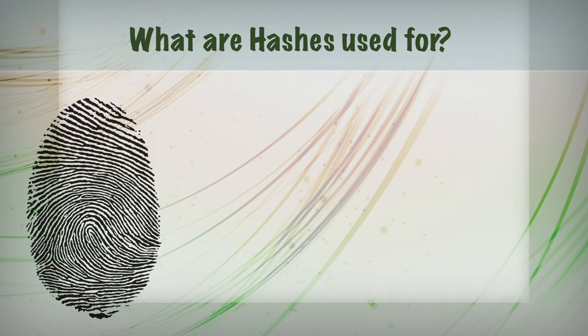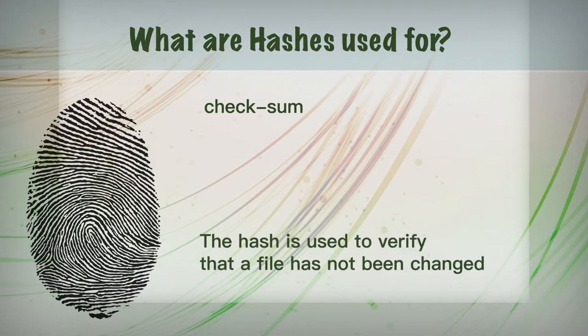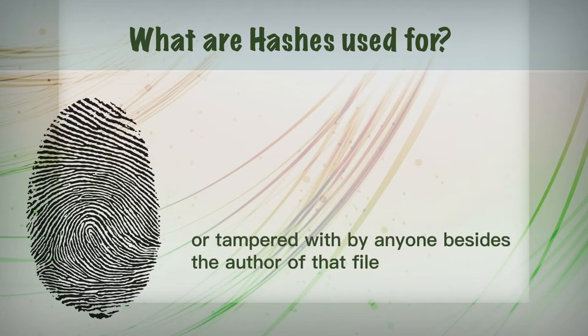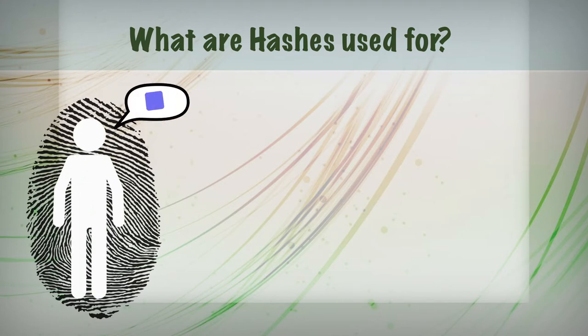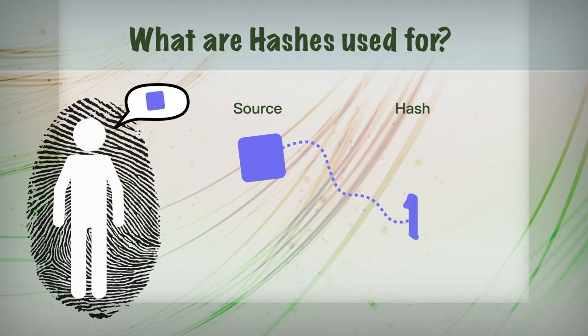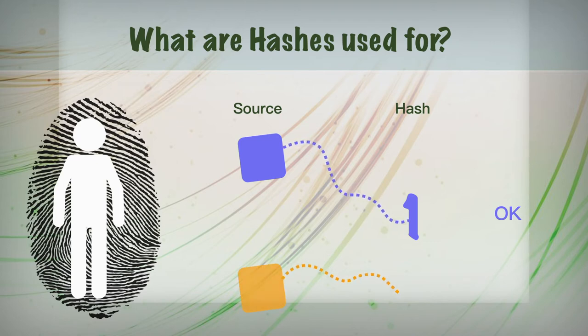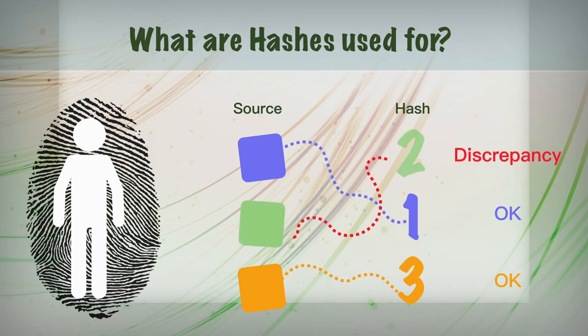Hashes are generally used to give a unique identity to a file — this is called a checksum. The hash is used to verify that a file has not been changed or tampered with by anyone besides the author of that specific file. A practical application of this is a whistleblower would publish files along with their hashes. Anyone who downloads the files can verify they are from the whistleblower by calculating the hash from the file. If there is any discrepancy, then you know it is not the exact file that the whistleblower released and that it was tampered with.